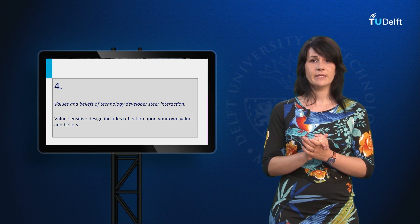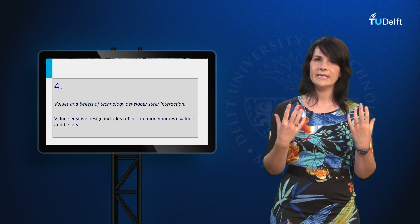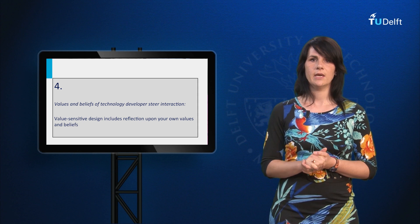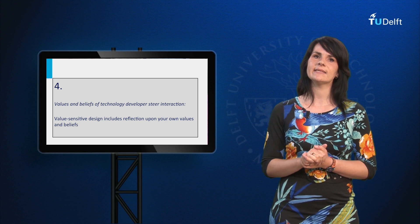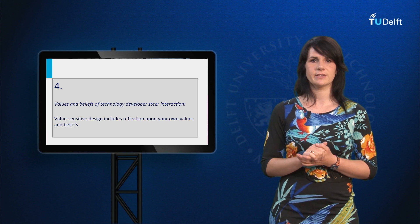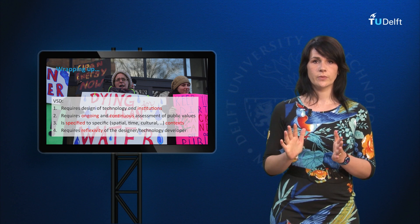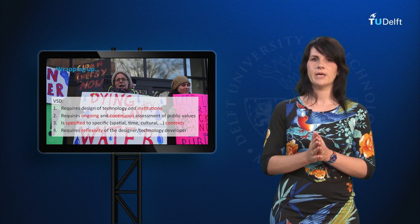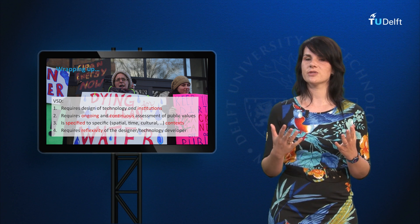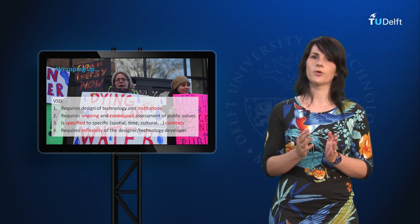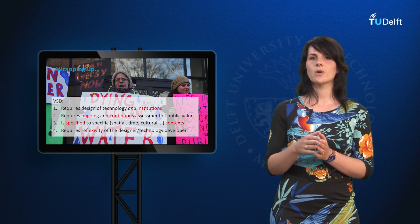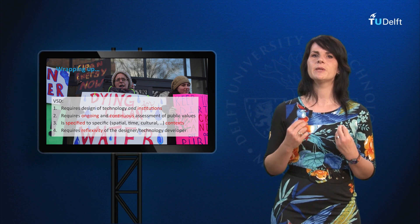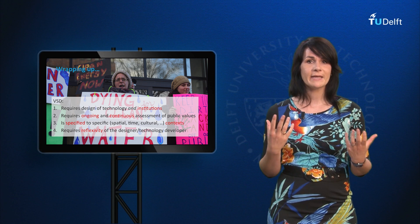Design for values thus means that you need to think about and reflect upon your own beliefs and values in order to investigate how these steer interaction with other stakeholders. This reflexivity is necessary to understand and accept that there is a diversity of values and problem definitions at stake in the case of technology. By now it should be clear that value-sensitive design is about more than technologies. It is about design and redesign of institutions as well — both formal institutions such as law and regulation, and informal institutions such as routines, practices, ways of doing things, and even deeply rooted beliefs about what the role of the public is in technology development.